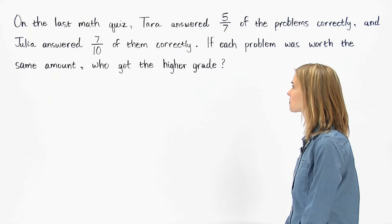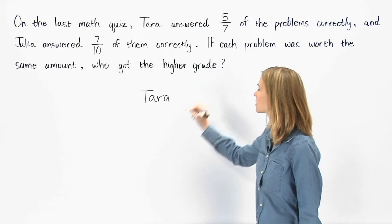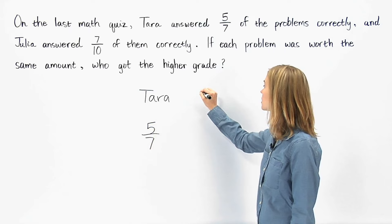So in this problem, we need to compare the fraction of problems that Tara answered correctly, five-sevenths, with the fraction of problems that Julia answered correctly, seven-tenths.